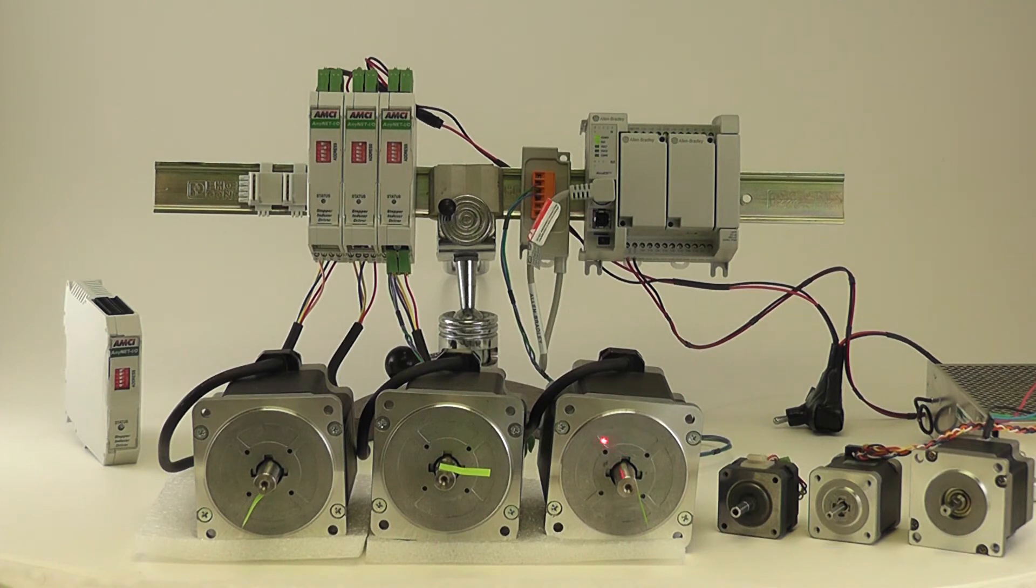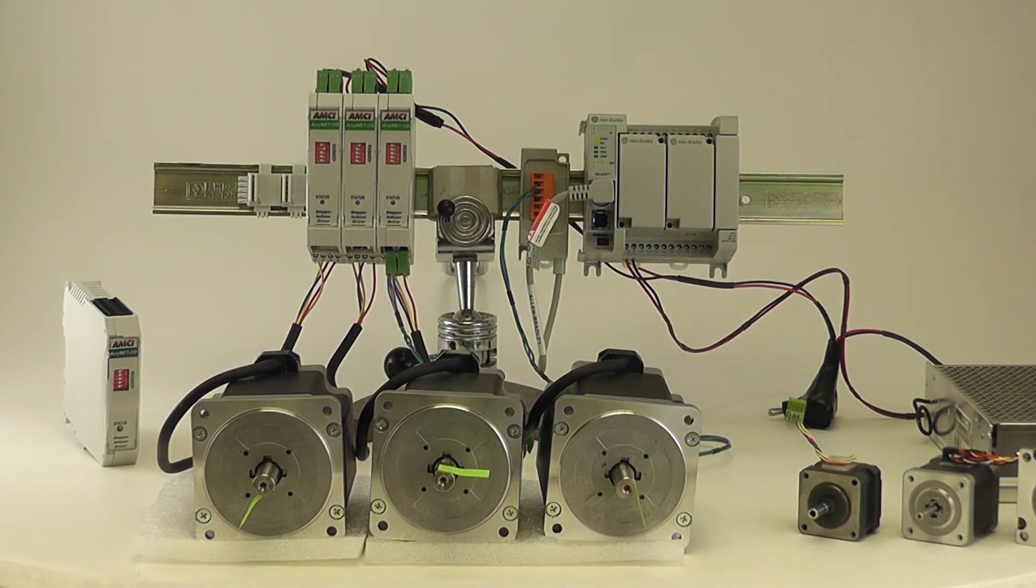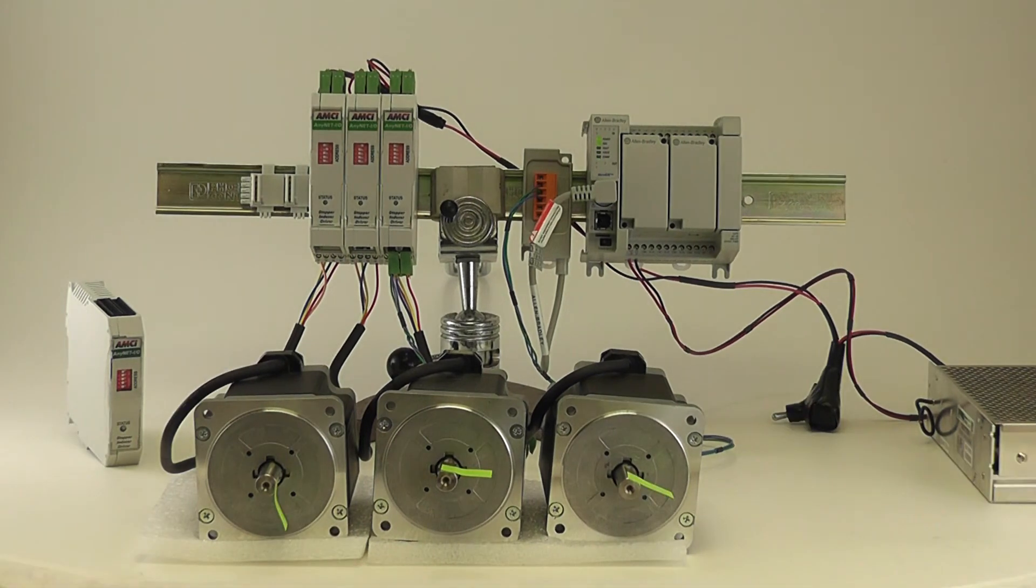These motors, for example, are rated at 1100 ounces of torque. It outputs up to 3.4 amps RMS max current. Let's go ahead and turn it on and see it in action.